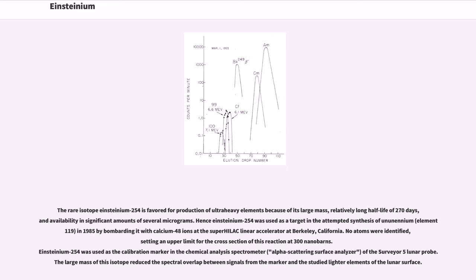The rare isotope Einsteinium-254 is favored for production of ultra-heavy elements because of its large mass, relatively long half-life of 270 days, and availability in significant amounts of several micrograms. Hence Einsteinium-254 was used as a target in the attempted synthesis of ununennium, element 119, in 1985 by bombarding it with calcium-48 ions at the SuperHILAC linear accelerator at Berkeley, California. No atoms were identified, setting an upper limit for the cross-section of this reaction at 300 nanobarns. Einsteinium-254 was used as the calibration marker in the chemical analysis spectrometer, alpha scattering surface analyzer, of the Surveyor 5 lunar probe. The large mass of this isotope reduced the spectral overlap between signals from the marker and the studied lighter elements of the lunar surface.